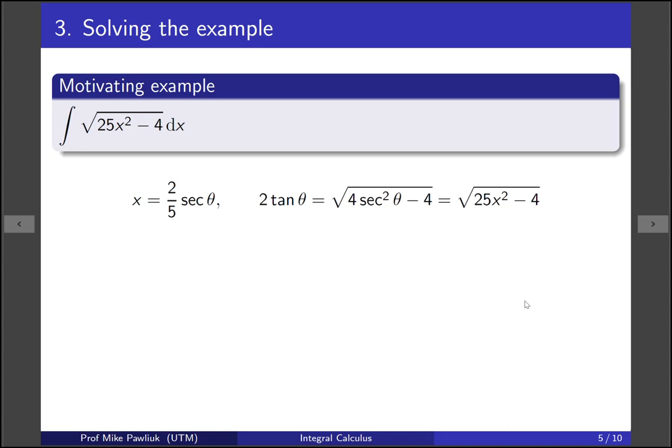So here's the information we have from before. So x should be 2 over 5 secant, and we know that the square root of 25x squared minus 4 will end up being 2 tan theta if we use the substitution.